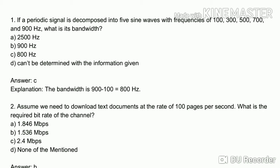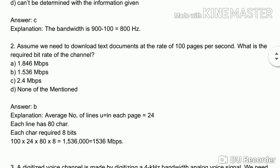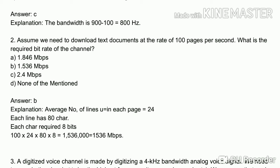Second question: assume we need to download text documents at the rate of 100 pages per second. What is the required bit rate of the channel? We find the average page size: one page has 24 lines, each line has 80 characters, and each character is 8 bits.